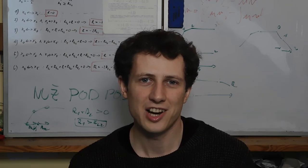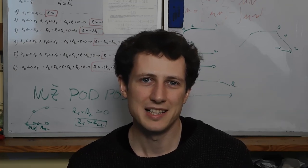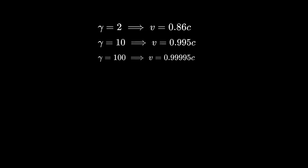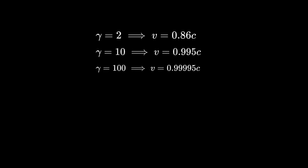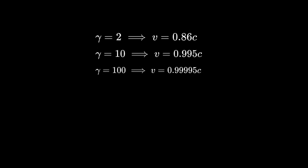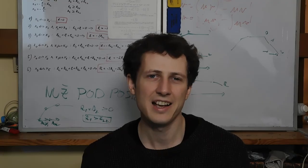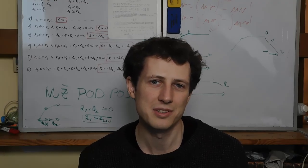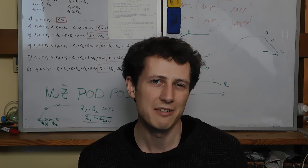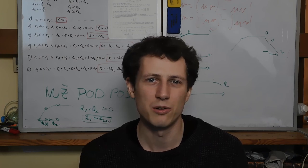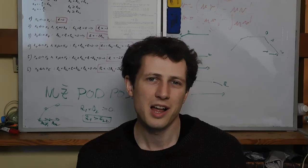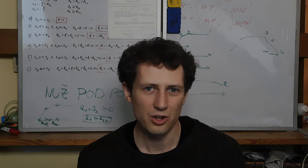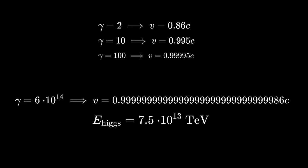The amount by which the length is contracted is represented by this gamma factor, which tells you how many times is the length shorter relative to the detector's rest frame for any given velocity of the Higgs boson. And I calculated how fast would have the Higgs boson go in order to cover the distances in the order of 1 meter. And I got this crazy number. You can also calculate its energy it would have to have for this velocity.